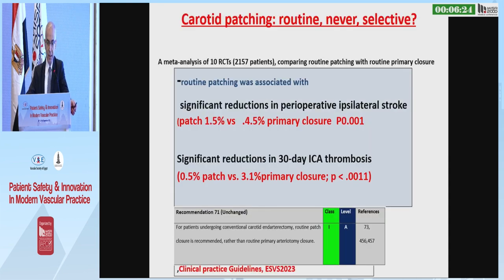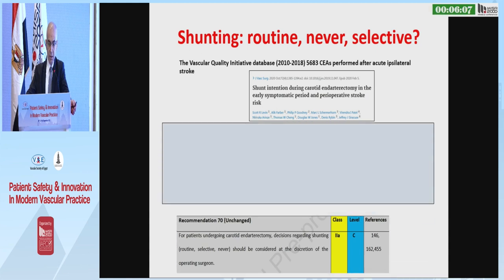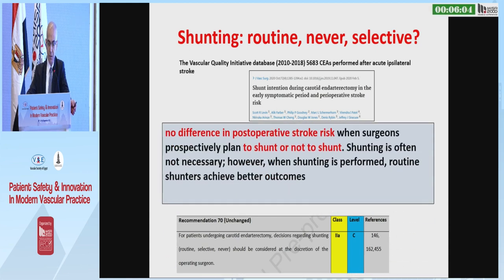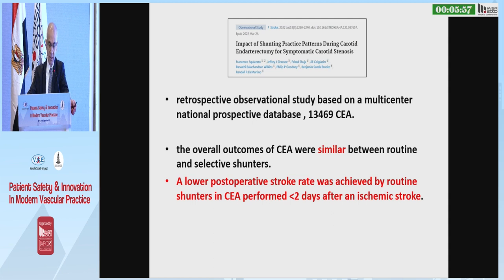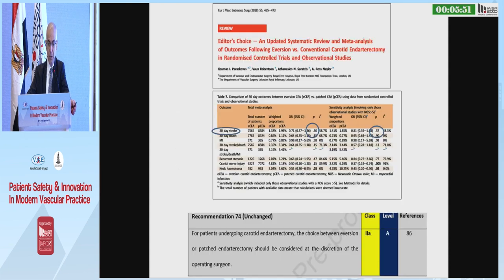Patch use: routine, never, or selective? Routine patching was associated with a reduction in perioperative ipsilateral stroke and reduction in 30-day carotid thrombosis. The recommendation is unchanged. Regarding shunting, there was no difference in post-operative stroke risk when the surgeon prospectively planned to shunt or not shunt. Shunting is of interest in the two days after acute ischemic stroke. There is no difference between conventional and eversion technique if conventional technique is closed with a patch.